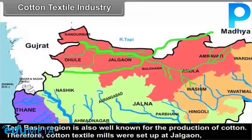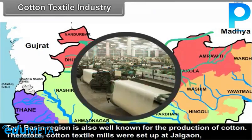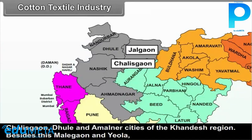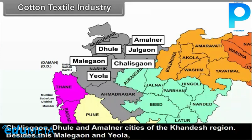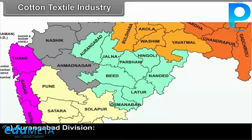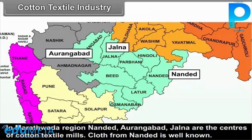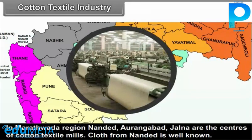In Nasik Division, the Tapti Basin region is also well known for the production of cotton. Therefore, cotton textile mills were set up at Jalgaon, Chalisgaon, Dhule and Amalner cities of the Khandesh region. Besides this, Malegaon and Yevla of Nasik District also have cotton textile industry. In Aurangabad Division, in the Marathwada region, Nanded, Aurangabad and Jalna are the centres of cotton textile mills.